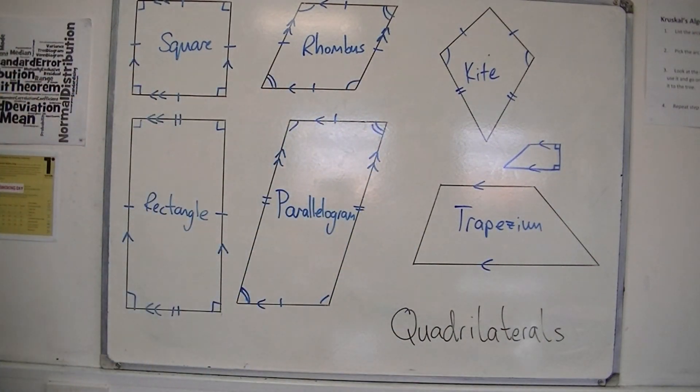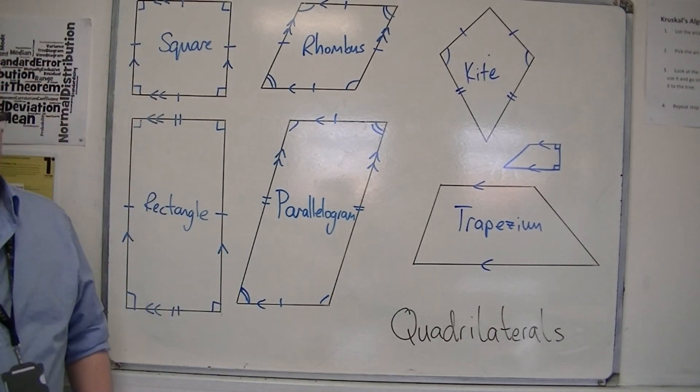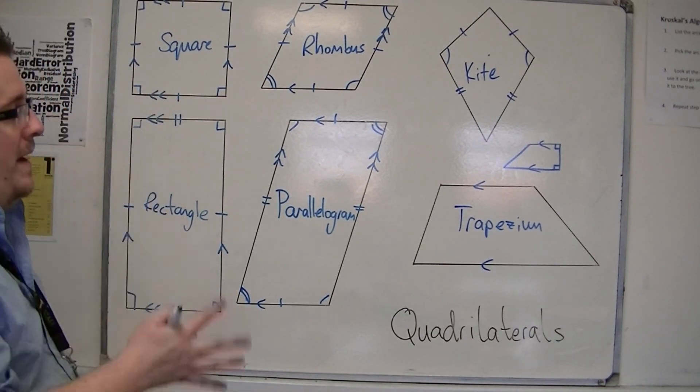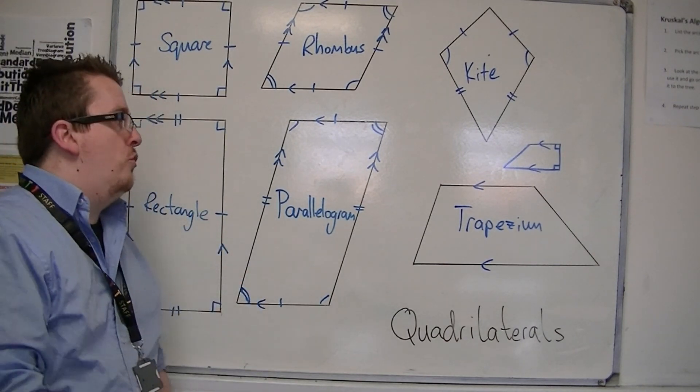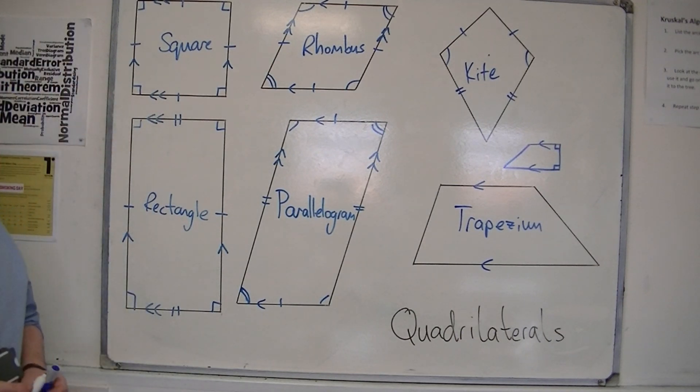But the key factor is the pair of parallel sides. And that's really as much information as it has. So, depending on how you draw it, because it can be drawn in multiple ways. So, these are the quadrilaterals.